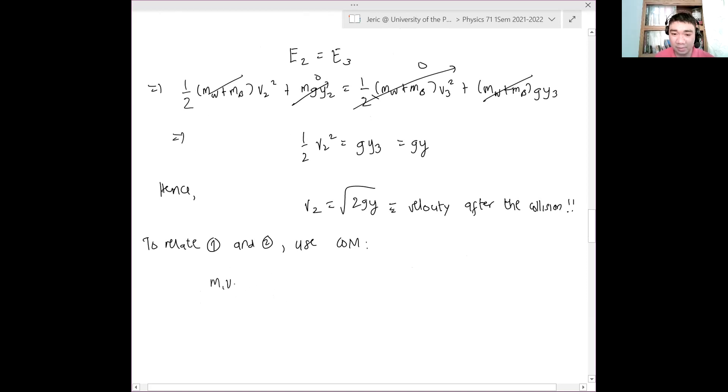M1, V1. Sorry. This should be M bullet V bullet state one plus M wood V wood state one equals the sum of them, MB plus MW, sum final state V2. Okay? So that's what I did, just so we don't get confused with final velocities.